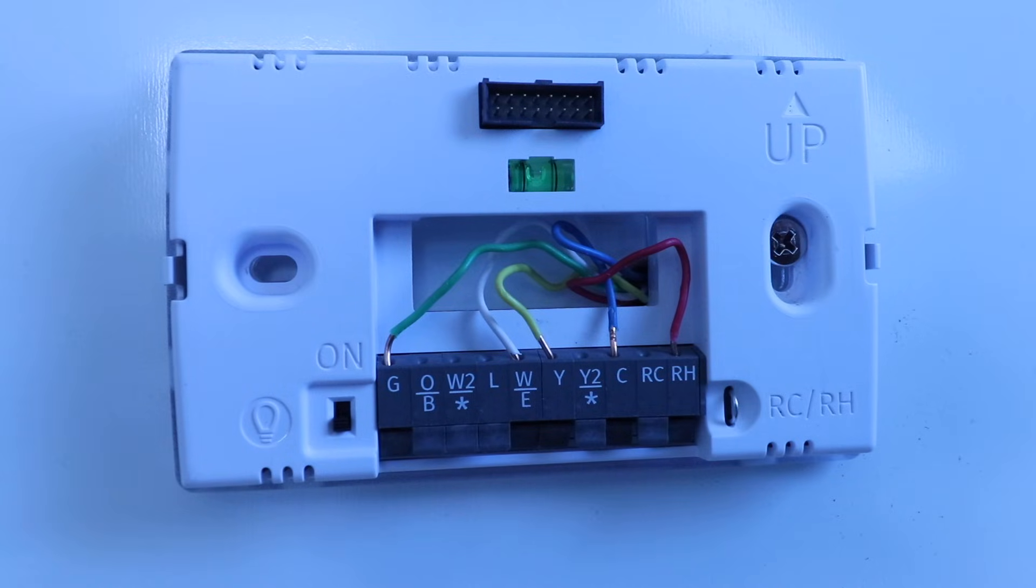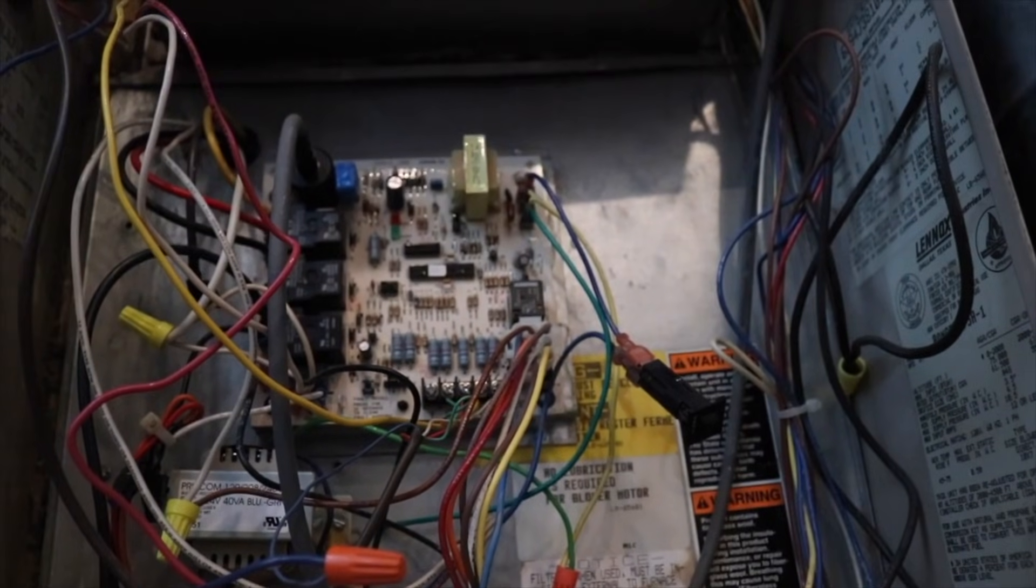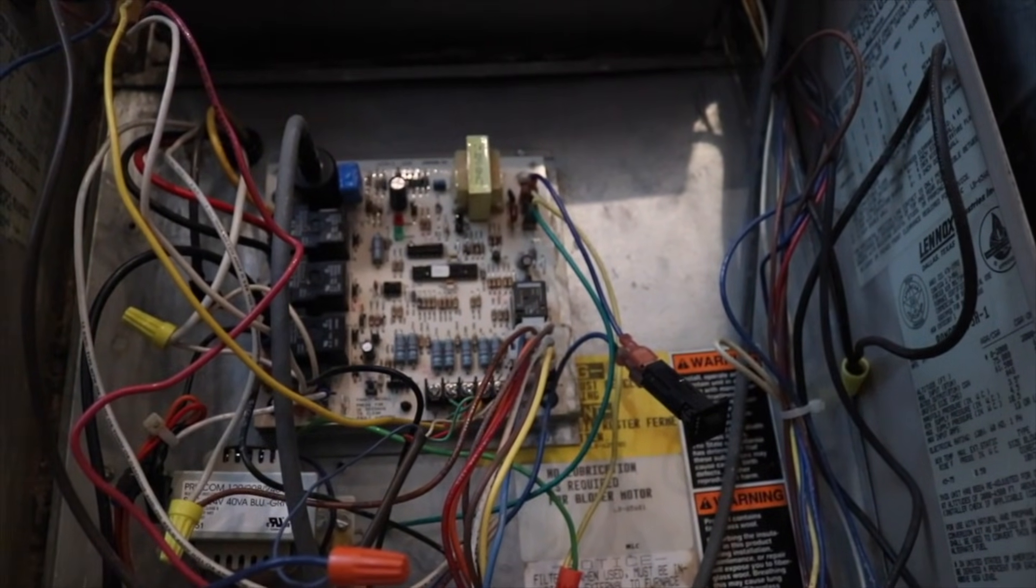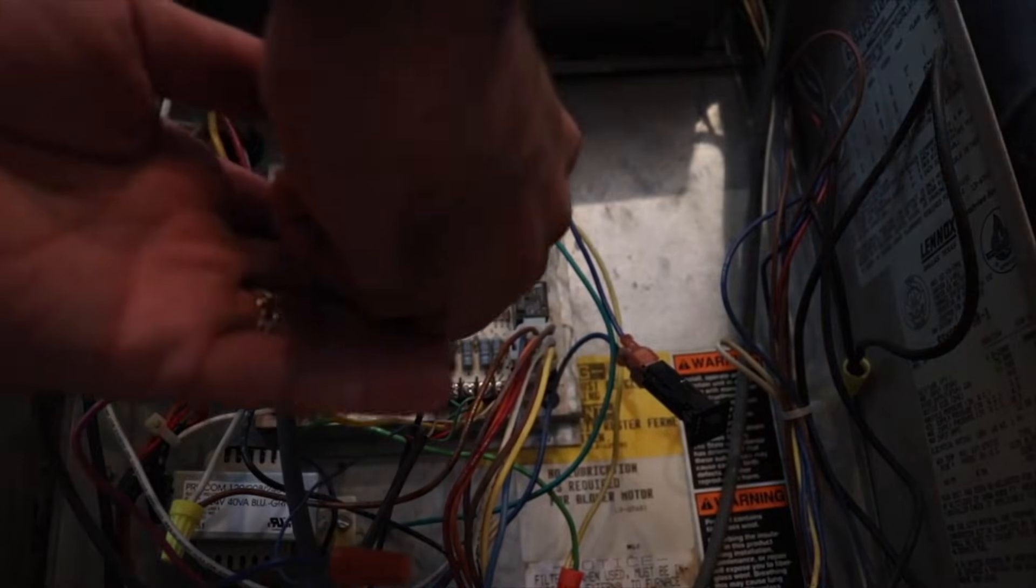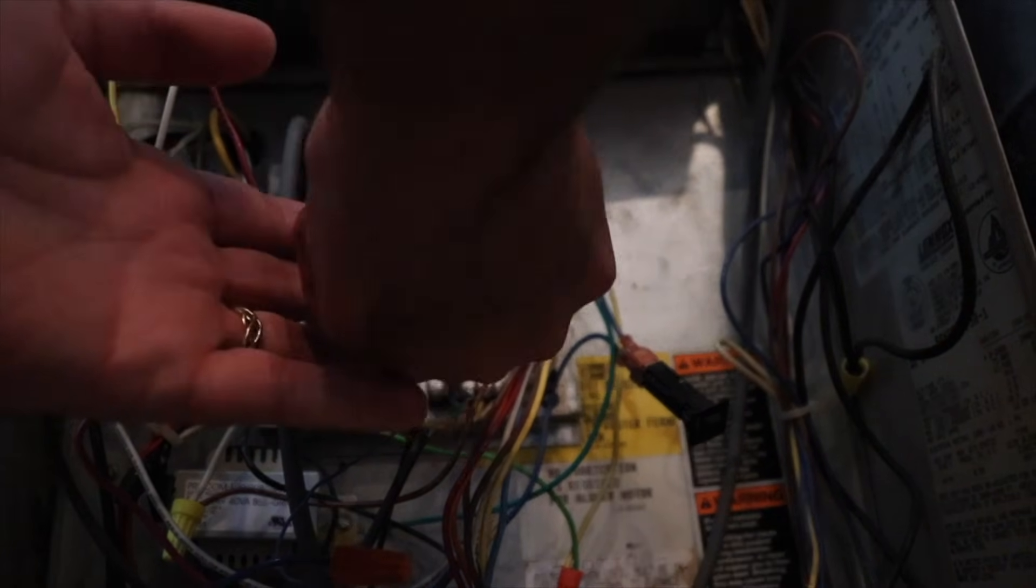Now the last option for using a common wire or adding a common wire would just be run additional wiring from your thermostat down to your HVAC system. And then you can have that extra wire and put it in the C terminal, both on the smart thermostat and at the HVAC control board down in your HVAC system. Then you can have that extra C wire when needed for smart thermostats.